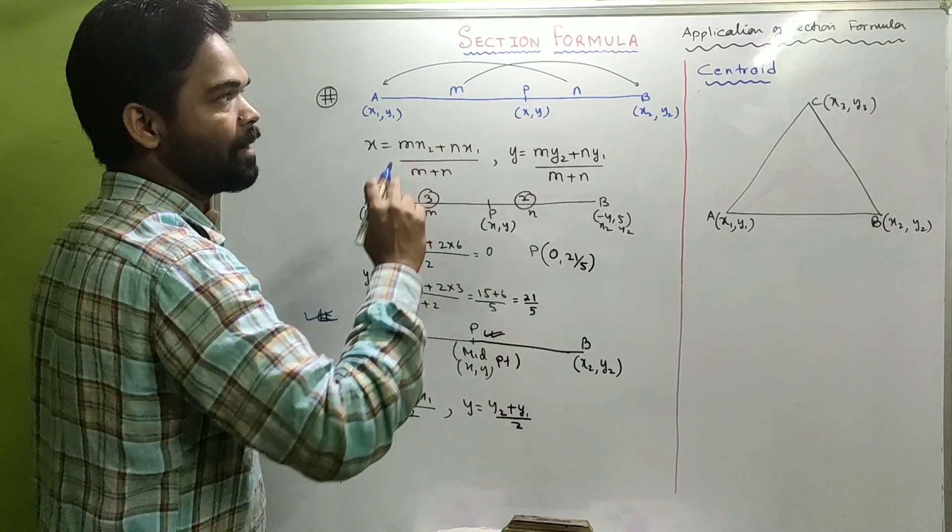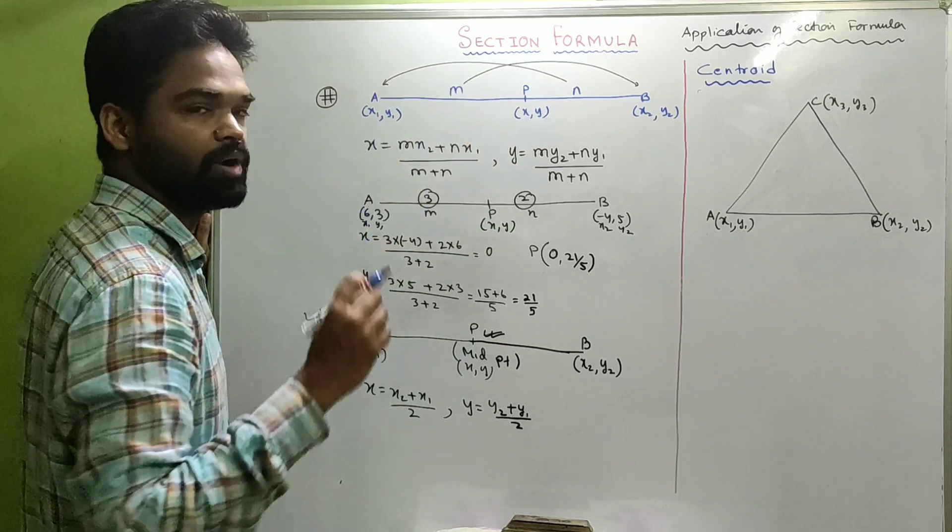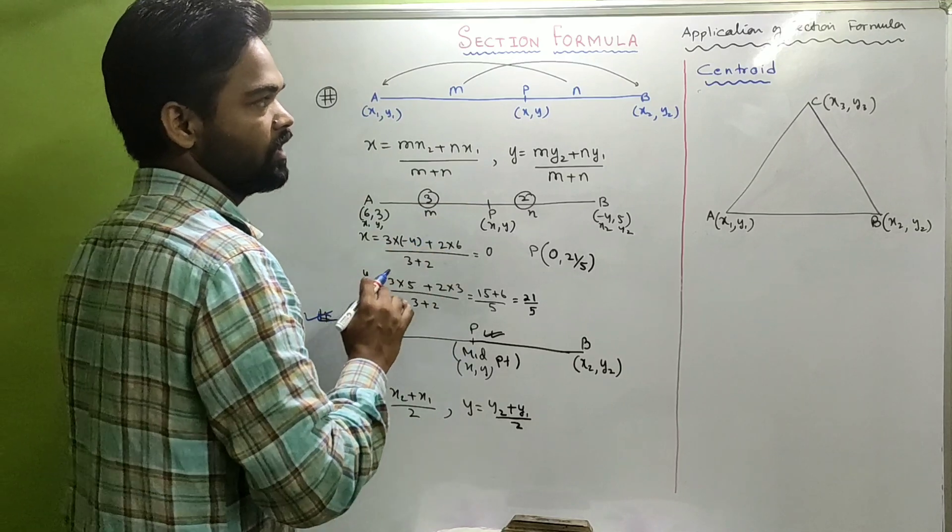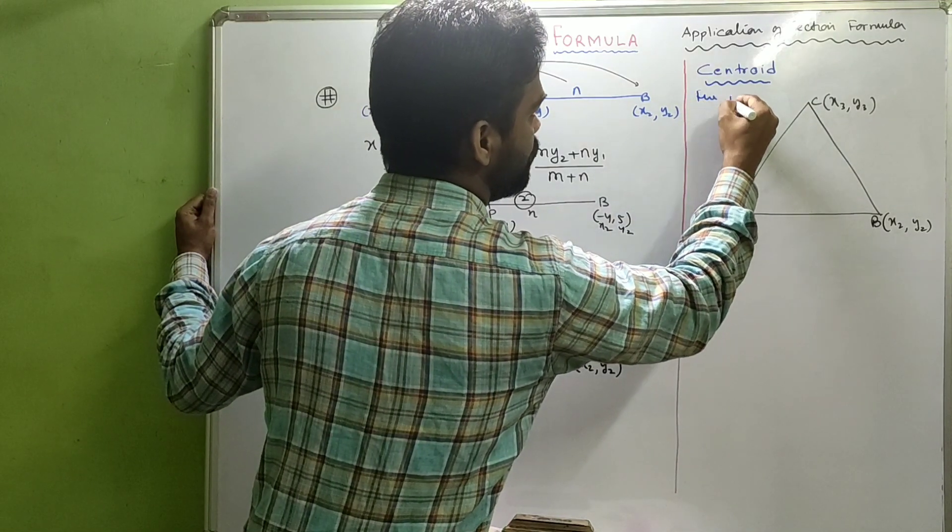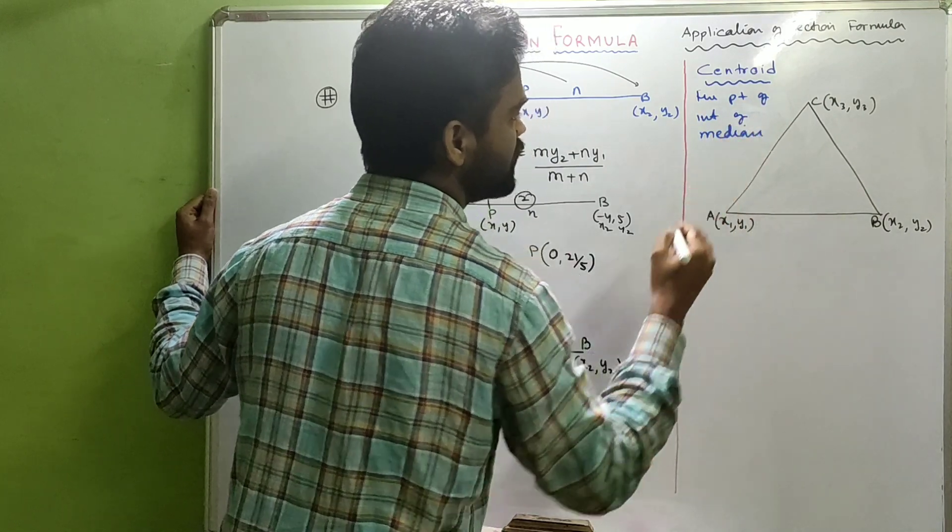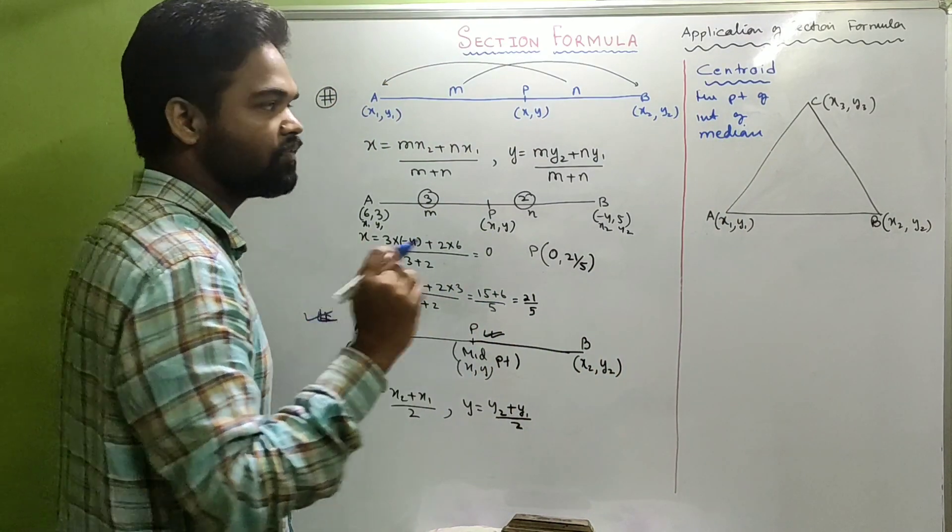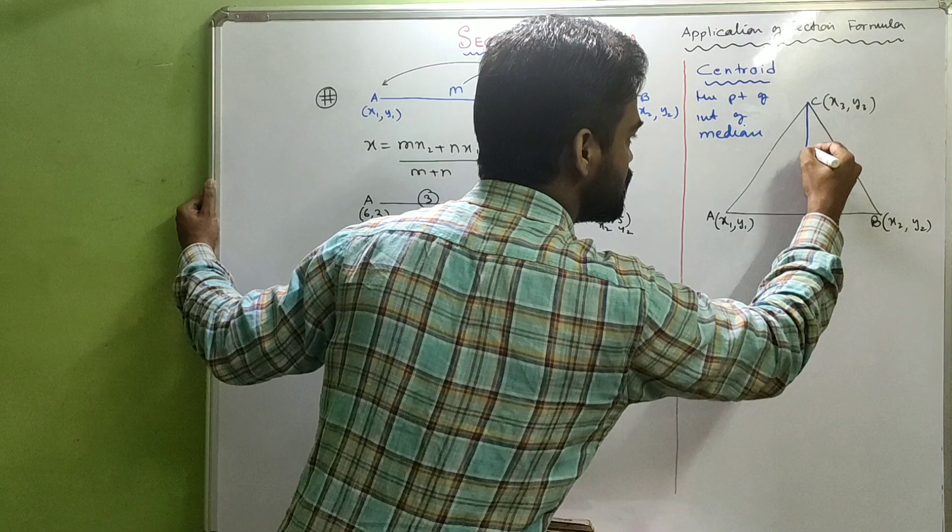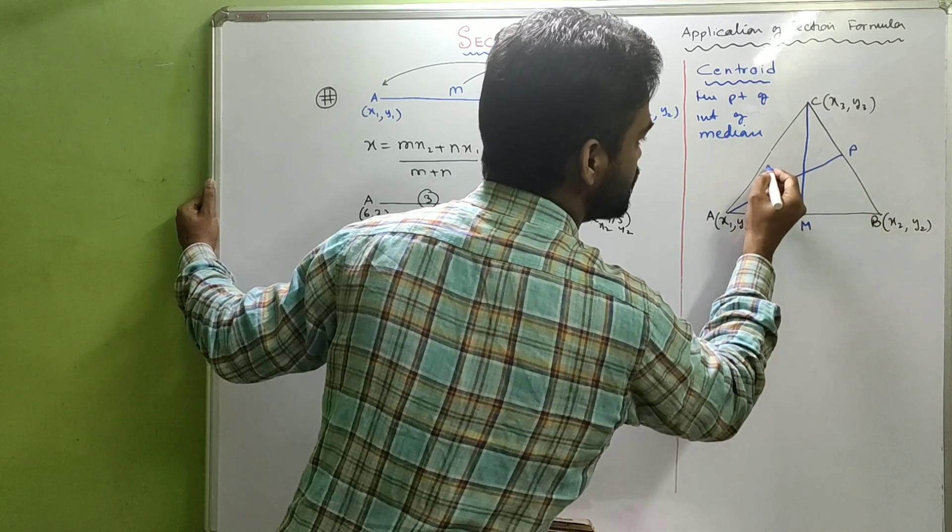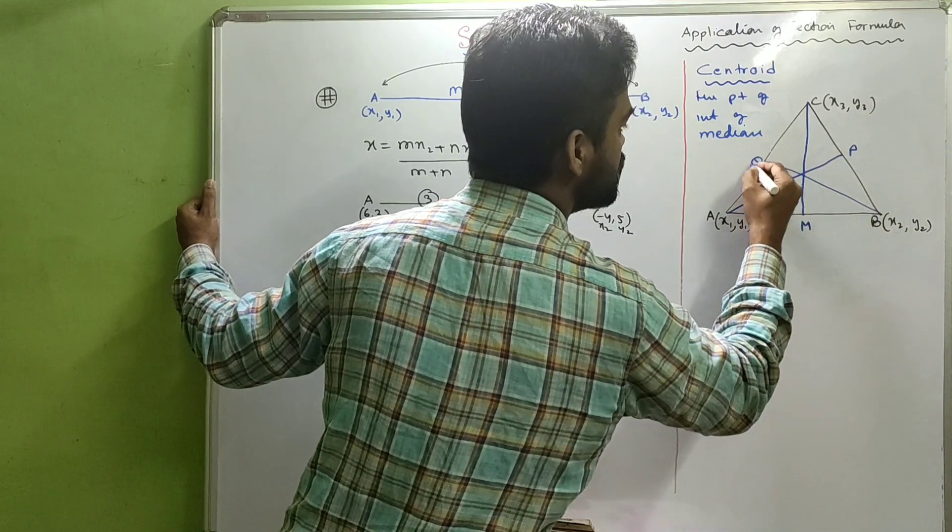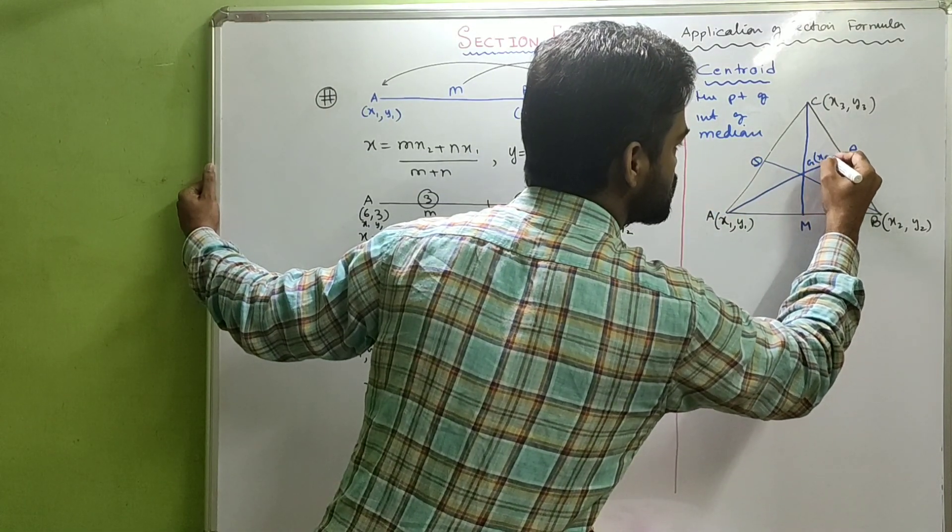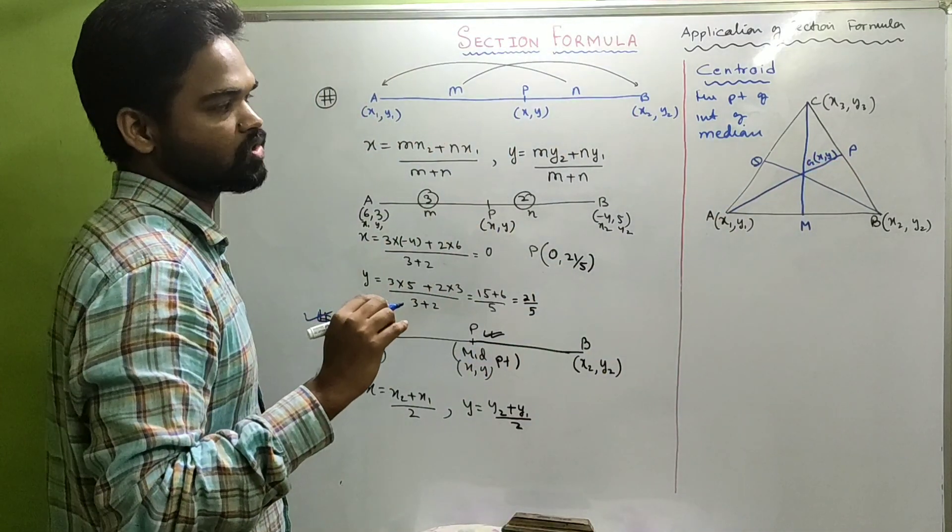Now, let us see one of the very important applications of section formula: how to get the centroid of a triangle, the coordinate of centroid, if the coordinate of the vertices are known. Look over here, careful. First of all, what is centroid? The point of intersection of medians, and we know the median divides the side into two equal halves.